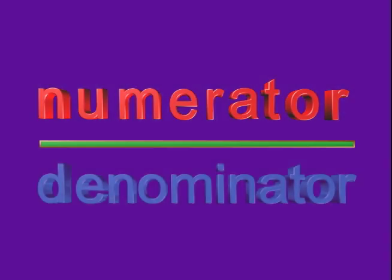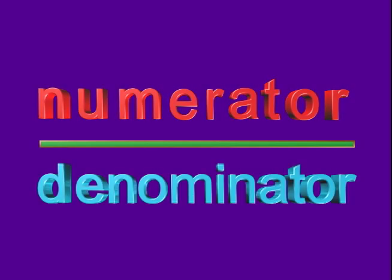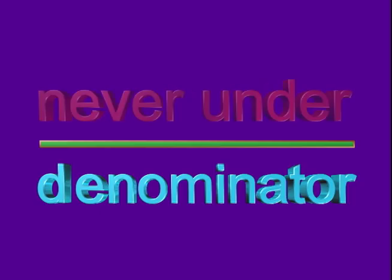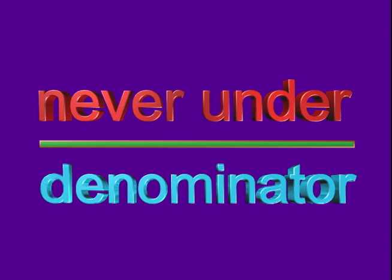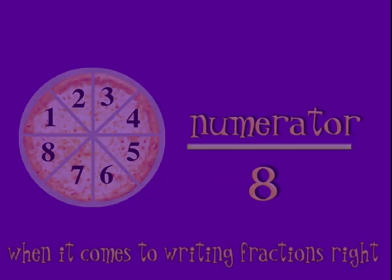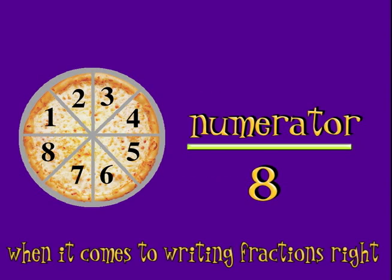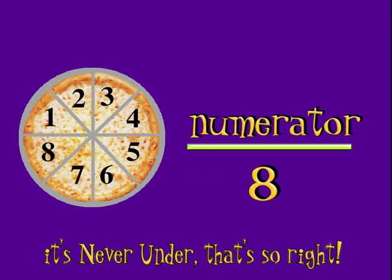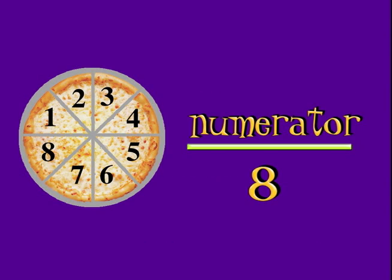Numerator starts with N, U for never under, N-U for never under. Numerators are on top. Denominator starts with D — down, D for denominator, D for down. Denominators are on the bottom. When it comes to writing fractions right, it's never under — that's alright — numerators right on top.